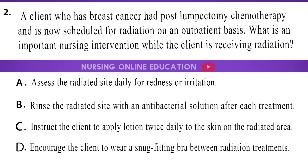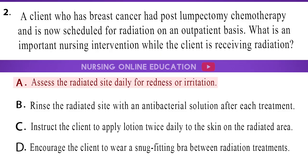Question 2: A client who has breast cancer had post-lumpectomy chemotherapy and is now scheduled for radiation on an outpatient basis. What is an important nursing intervention while the client is receiving radiation? A. Assess the radiated site daily for redness or irritation. B. Rinse the radiated site with an antibacterial solution after each treatment. C. Instruct the client to apply lotion twice daily to the skin on the radiated area. D. Encourage the client to wear a snug-fitting bra between radiation treatments. The answer is option A: Assess the radiated site daily for redness or irritation.